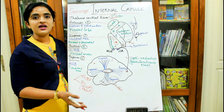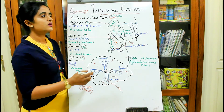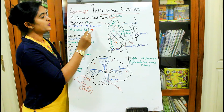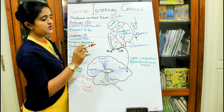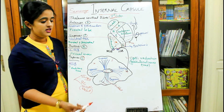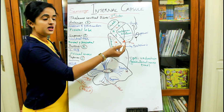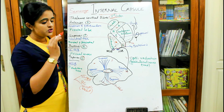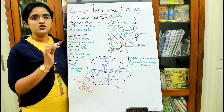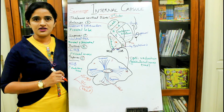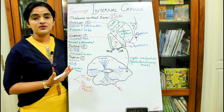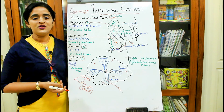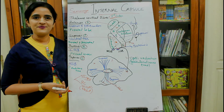Understanding these arrangements has clinical significance. A lesion in the anterior limb of the internal capsule affects fibers going to the frontal lobe. A lesion in the retrolentiform part affects vision. A lesion in the sublentiform part causes hearing loss. That is all about the arrangement of sensory fibers in the internal capsule. In the next session, we will discuss the blood supply of the internal capsule. Thanks for watching.